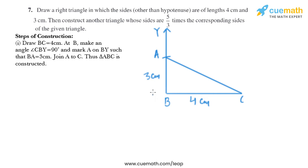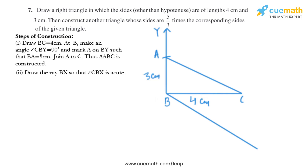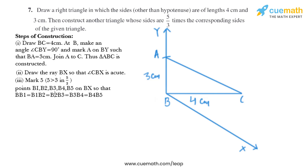We have got triangle ABC. Now in the next step we need to draw ray BX so that angle CBX is acute. We'll draw BX and name it as X. We have got angle CBX as an acute angle. Now we need to mark five points on BX — B1, B2, B3, B4, B5 — such that BB1 = B1B2 = B2B3 = B3B4 = B4B5. So we'll mark the points like this.